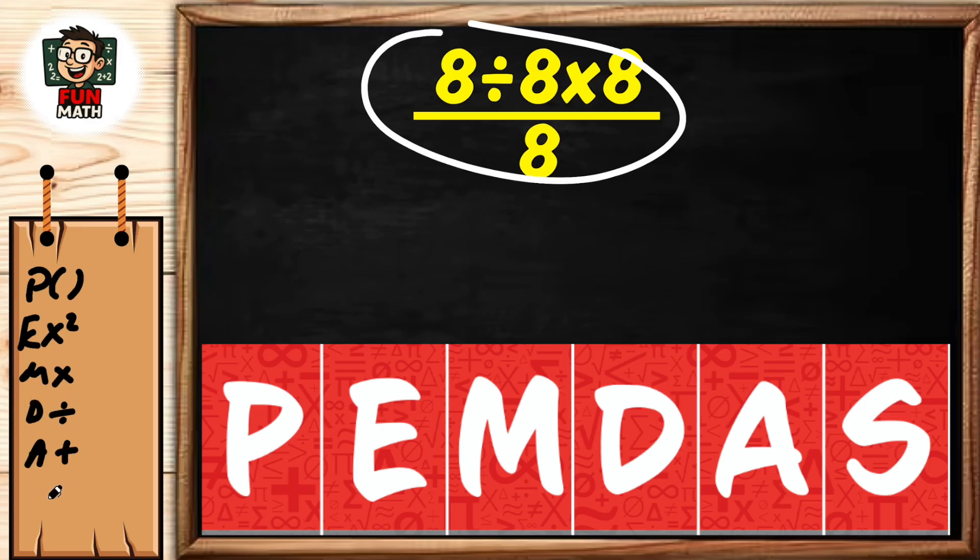We have one more feature here. There is no order between multiplication and division—operations are performed from left to right. Similarly, there is no order between addition and subtraction—operations are performed from left to right.